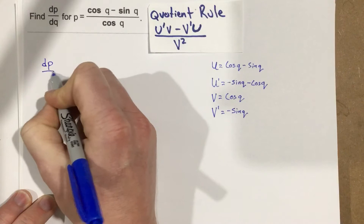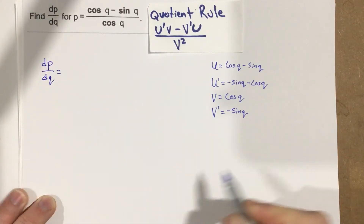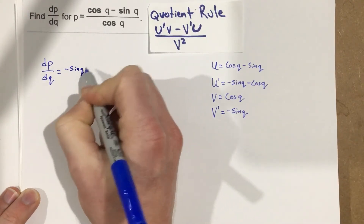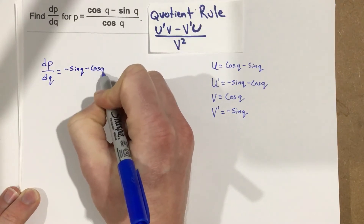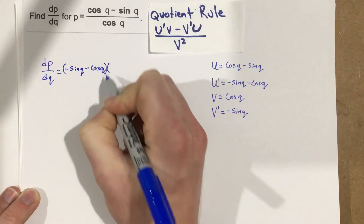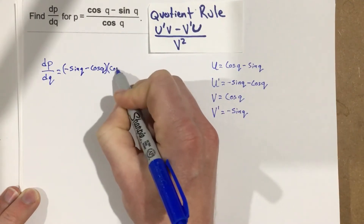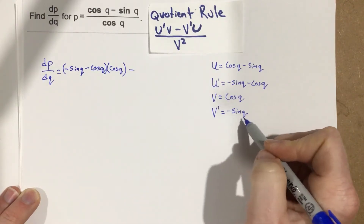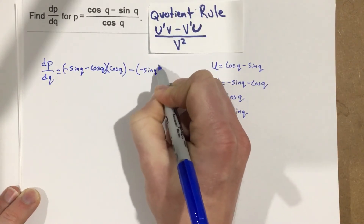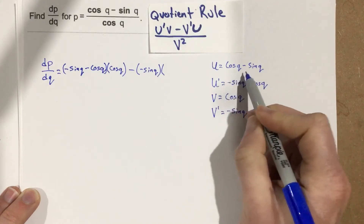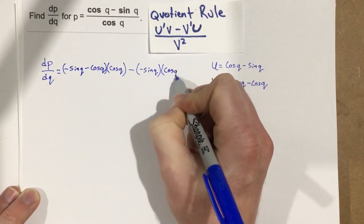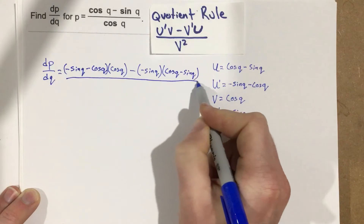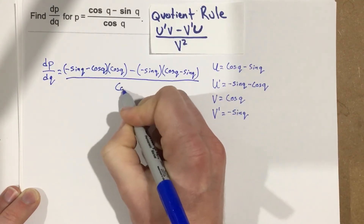Now we can use the quotient rule to finish this out. The derivative of P with respect to Q equals U prime times V minus V prime times U, all over V squared. That gives us: (negative sine Q minus cosine Q) times cosine Q, minus (negative sine Q) times (cosine Q minus sine Q), all over cosine squared Q.